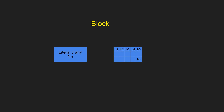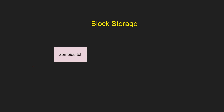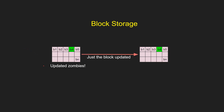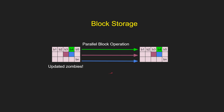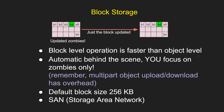Now let's take a look at block storage. For block storage, any data is broken into multiple blocks and stored as separate pieces. So if we take a look at our favorite book, zombies.text, it's going to be broken into multiple blocks — let's say B1, B2, B3, B4 to BN. And if the book is updated, it has the intelligence to just go and update the block that's changed. Also, different blocks can be parallelly uploaded and downloaded, making it much, much faster. So block level operation is faster than object level.